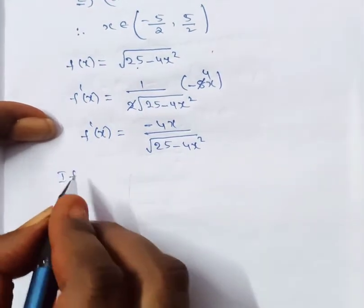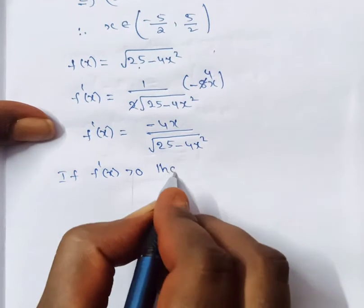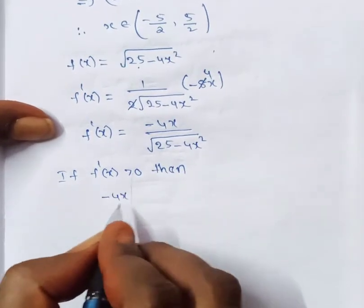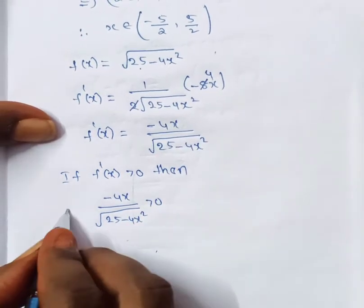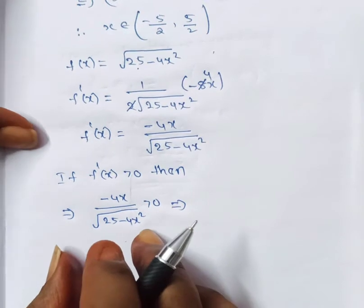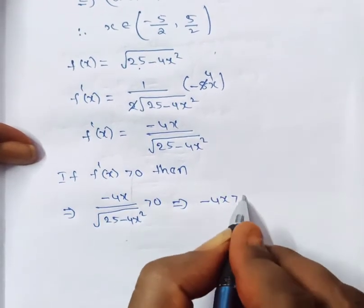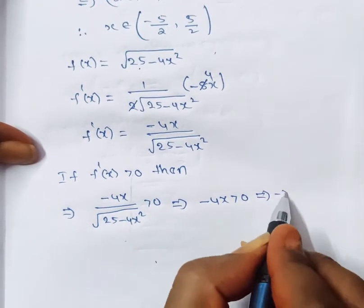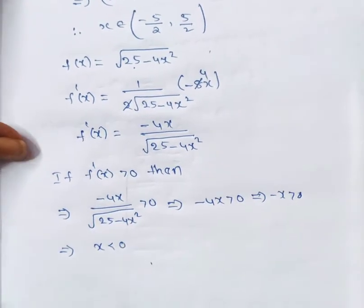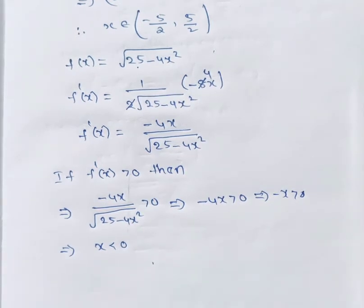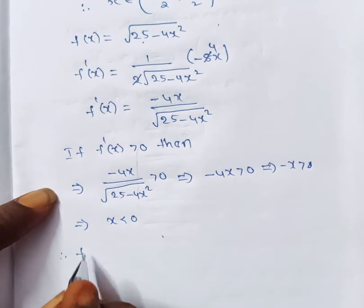If f'(x) > 0, then −4x / √(25 − 4x²) > 0. Since the denominator √(25 − 4x²) is always positive within the domain, we need −4x > 0, which implies x < 0. Therefore f(x) is increasing on (−5/2, 0).